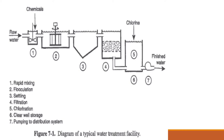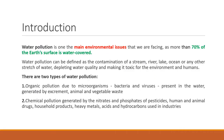The chemicals form bigger flocs which settle due to gravity. The top water is then sent to a filtration unit to remove finer particles. Finally, it is sent to a chlorination unit where it is disinfected, and then sent through the distribution system to houses. This is how a typical water treatment plant works.